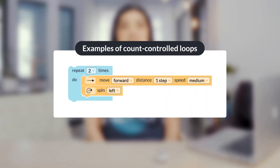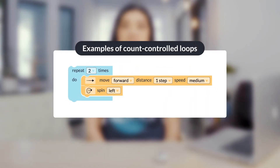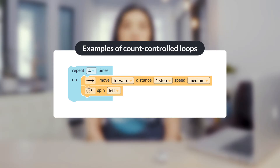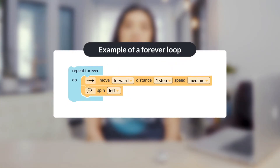Here is an example of a count-controlled loop. The sequence move forward, then spin left, would run two times. Here is another count-controlled loop where the sequence move forward, then spin left, would run four times. Count-controlled loops have numbers to tell a sequence exactly how many times to run. Here is an example of a forever loop, where the sequence move forward, then spin left, would run over and over again without end.